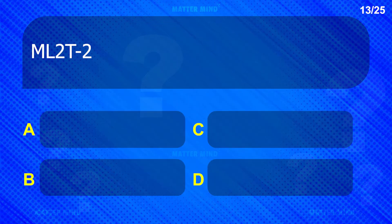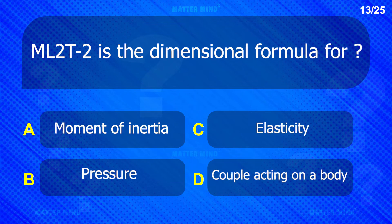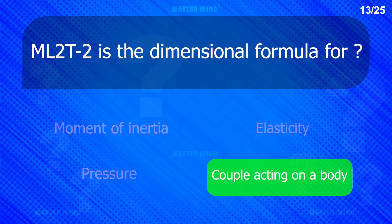ML power T power minus 2 is the dimensional formula for — Couple acting on the body.